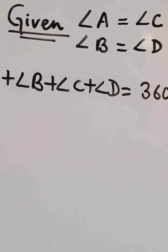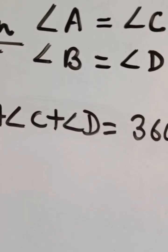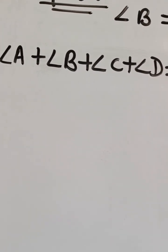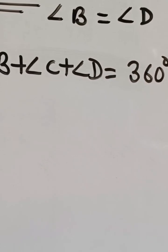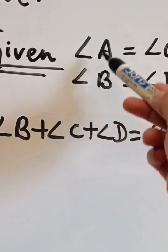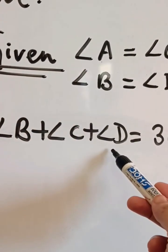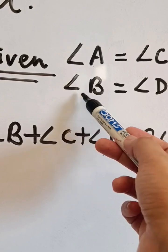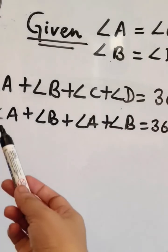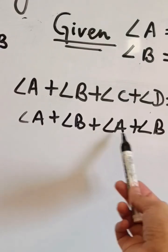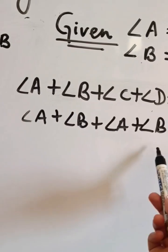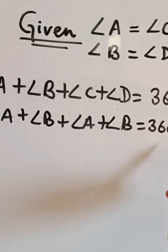We have been given angle A equals angle C and angle B equals angle D, and we know that the sum of all 4 angles of a quadrilateral is equal to 360 degrees. In place of angle C we can replace angle A, and in place of angle D we can replace angle B using the given condition. That means twice of angle A plus twice of angle B equals 360 degrees, and therefore angle A plus angle B equals 180 degrees.